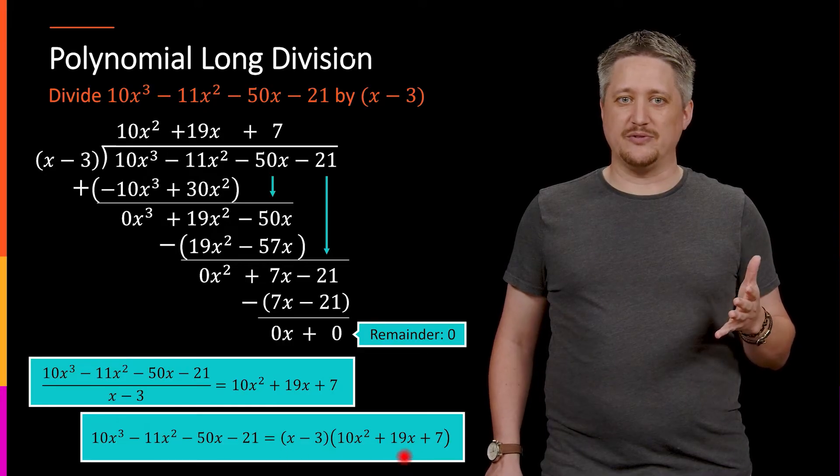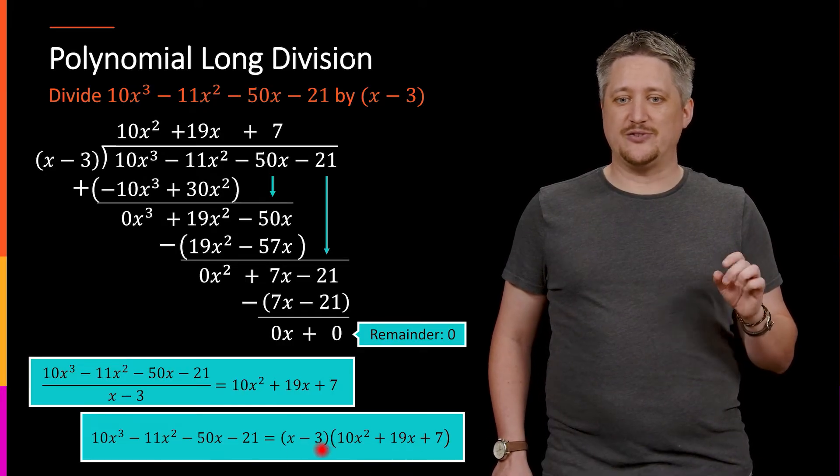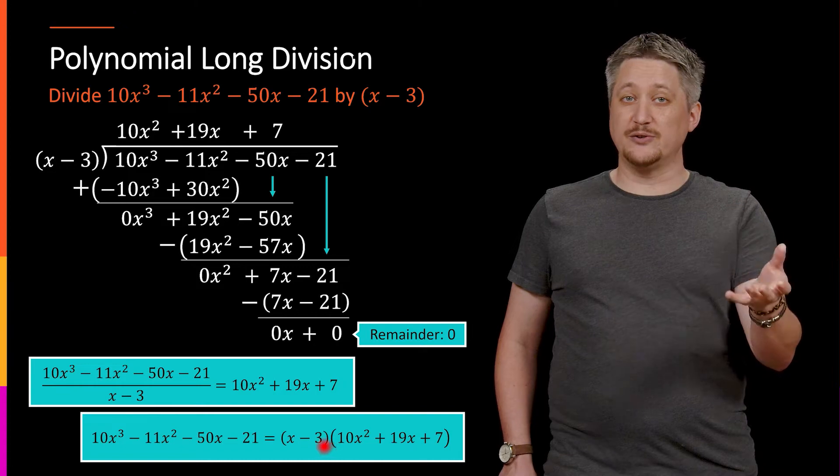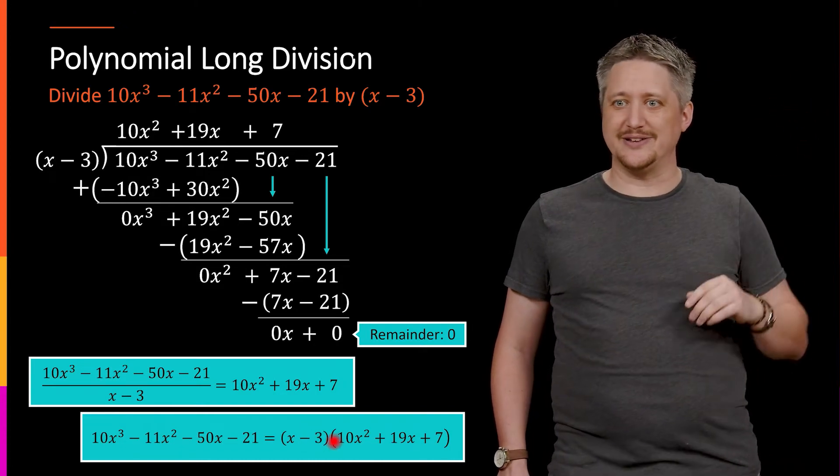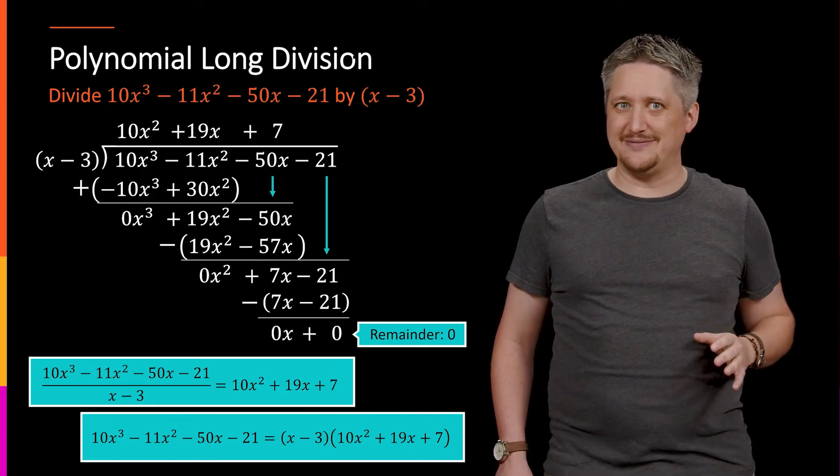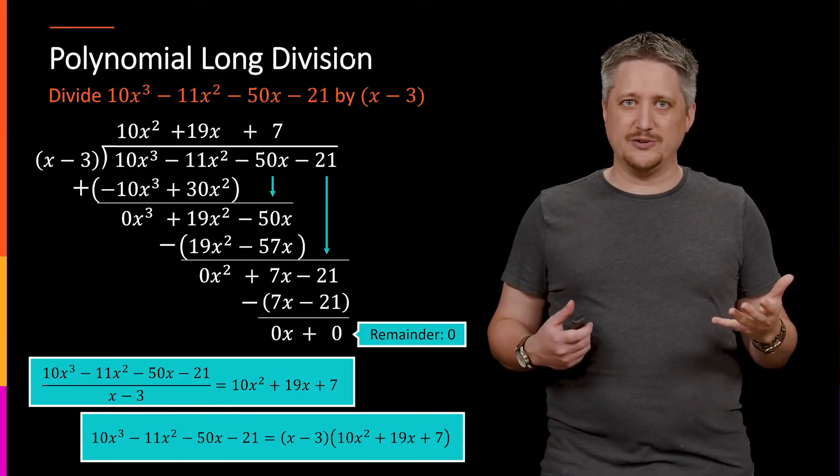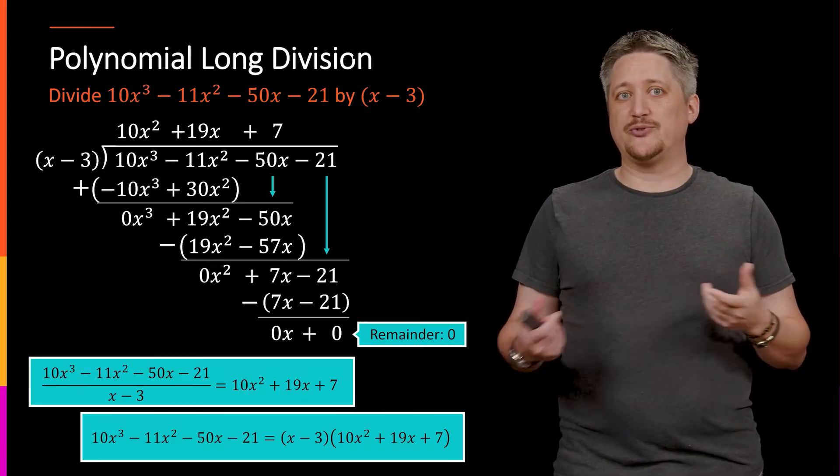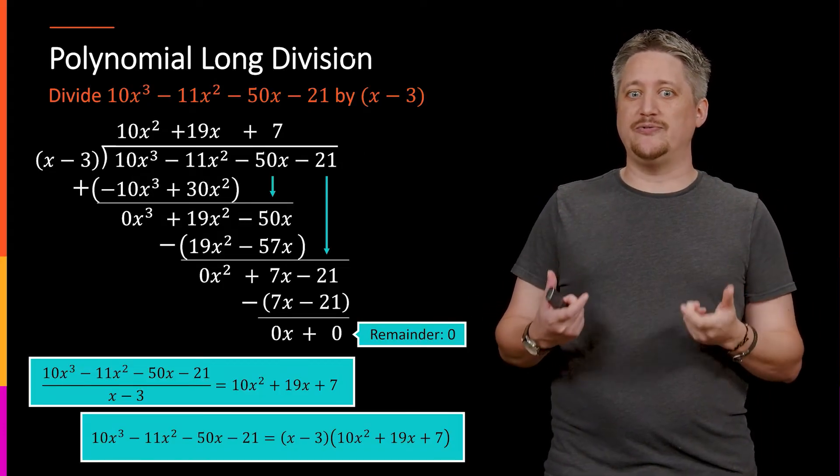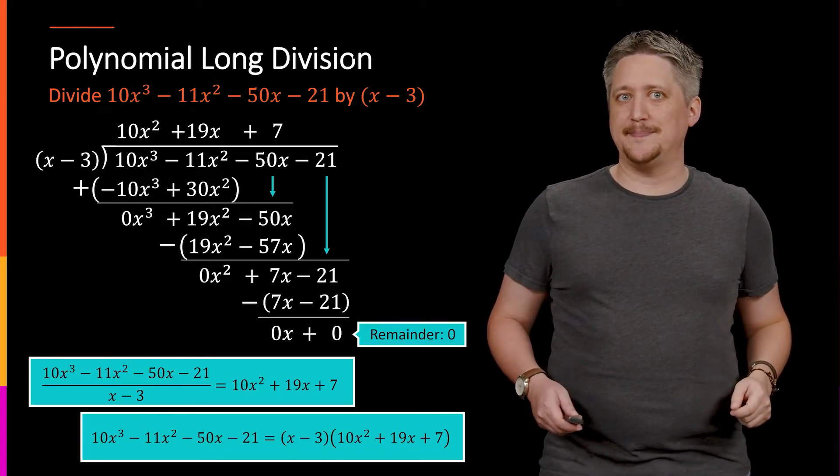So, this is why this long division is helpful is that it's a tool to take a zero that we sort of magically know about, and again, we're going to talk about that at another time, how these things are magically known to us, but we can take a zero that we already know and extract it out and create a factored form with that piece of information.